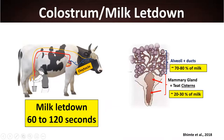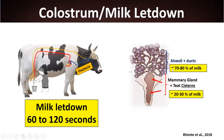Oxytocin stimulates the cells in the alveoli to compress and release milk — this is the milk letdown reflex, which takes one to two minutes. This is critical because 70–80% of milk is stored in the alveoli and ducts, with only about 20% in the cisterns of the mammary glands and teats.